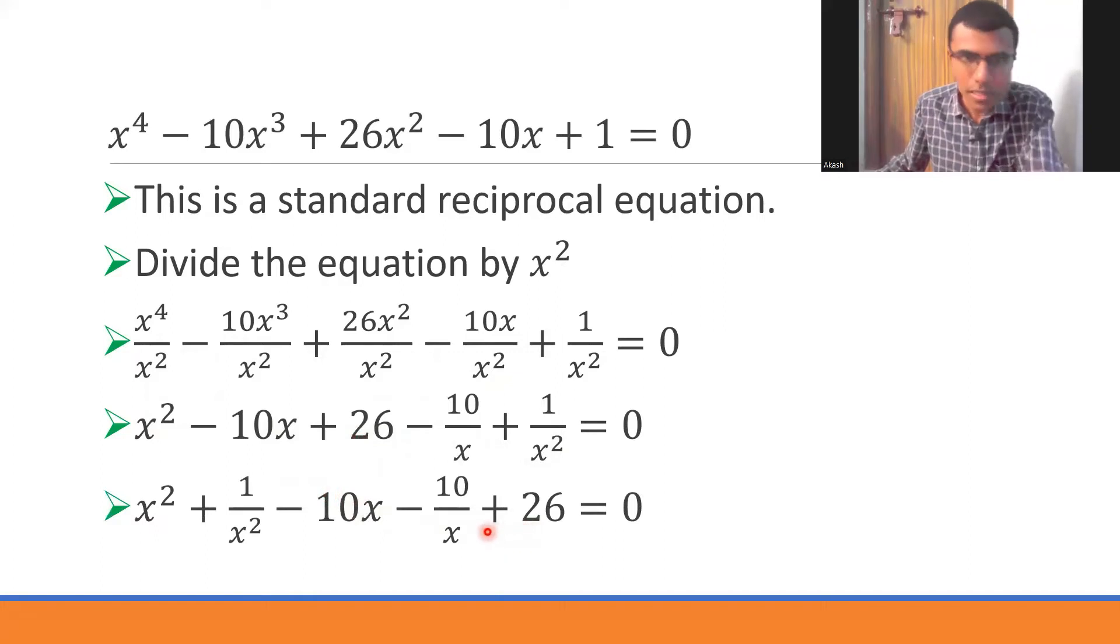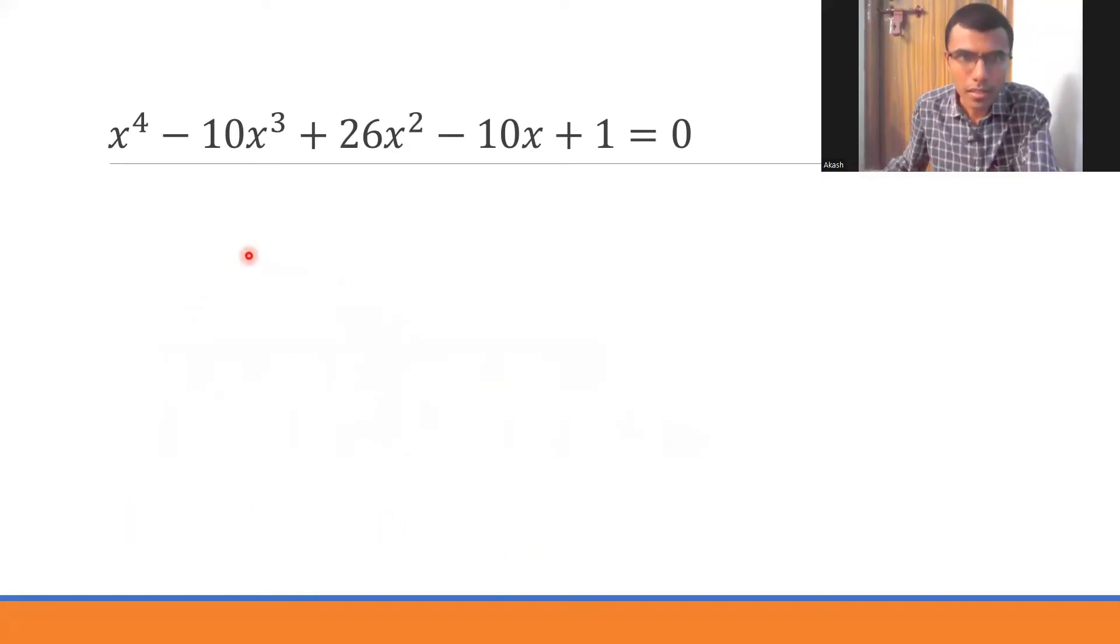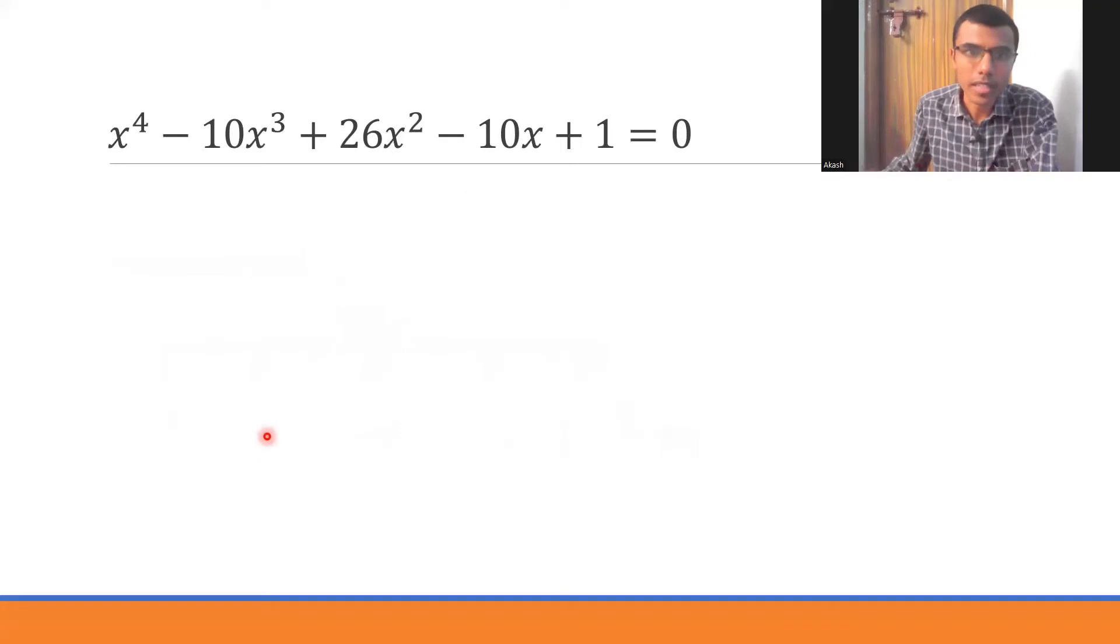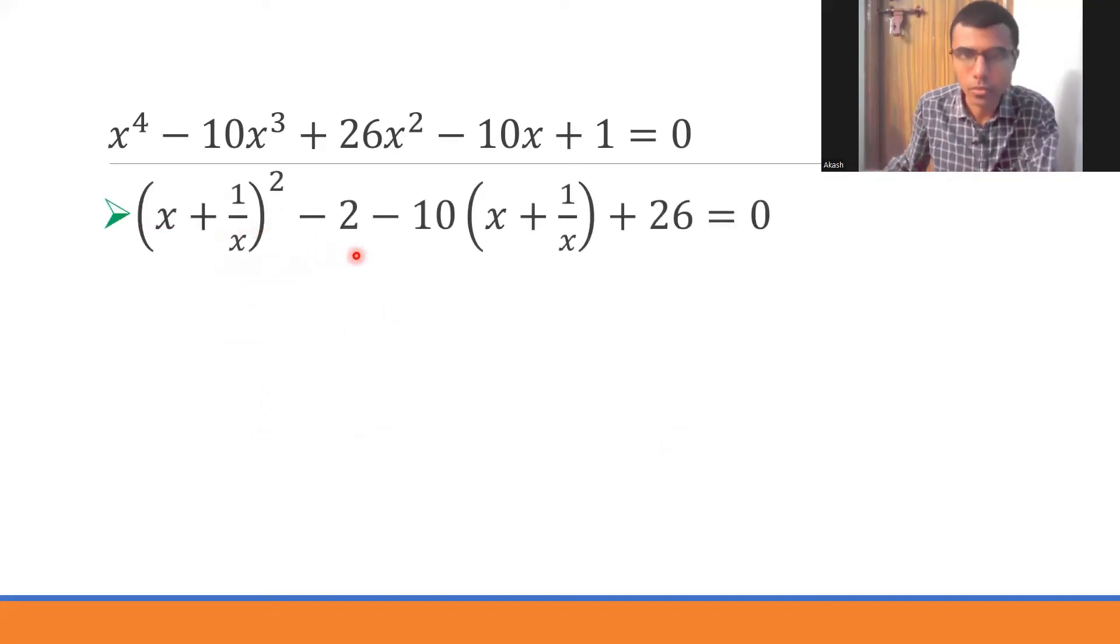Now I would be grouping. This x² + 1/x² is nothing but (x + 1/x)² - 2. It is nothing but (x + 1/x)² - 2.